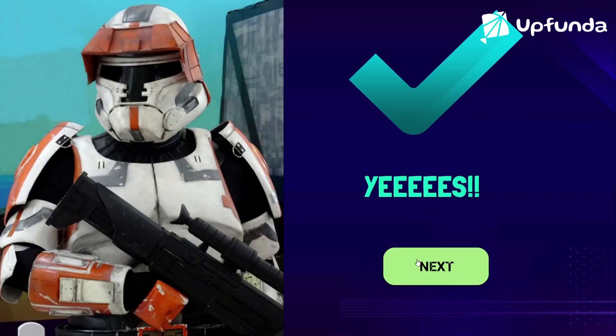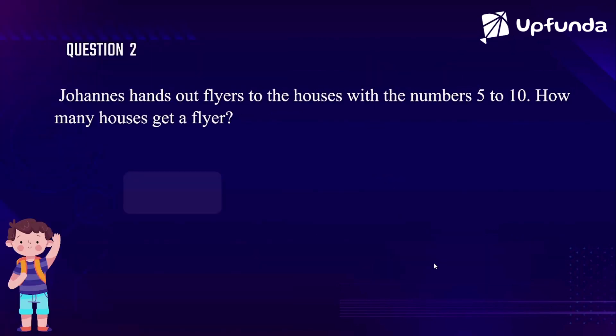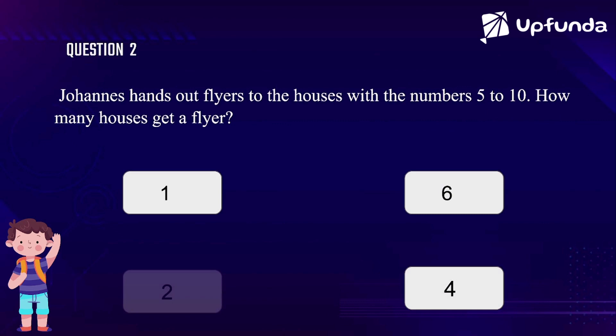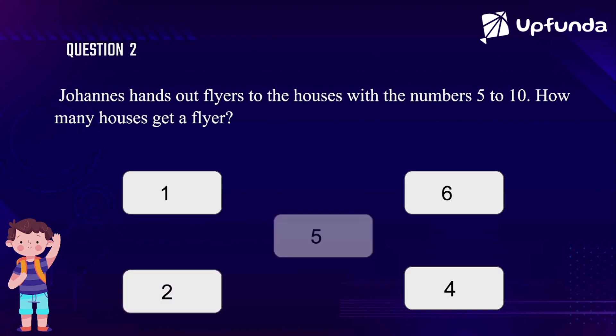So the answer is 4. Let's go to the next question. Johannes hands out flyers to the houses with the numbers 5 to 10. How many houses get a flyer?